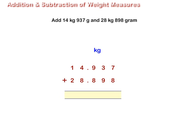Now arrange these numbers in columns. Regroup and add as shown on the screen. The sum is equal to 43.835 kilograms, or 43 kg 835 grams.